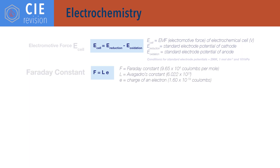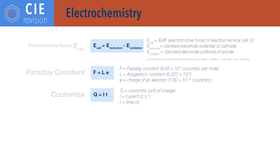F equals L times e, where F is the Faraday constant — 9.65 times 10 to the 4 coulombs per mole — L is Avogadro's constant (6.022 times 10 to the 23), and e is the charge of one electron, 1.60 times 10 to the minus 19 coulombs. Q equals I times t, where Q is coulombs unit of charge, I is current in coulombs per second, and t is time in seconds.